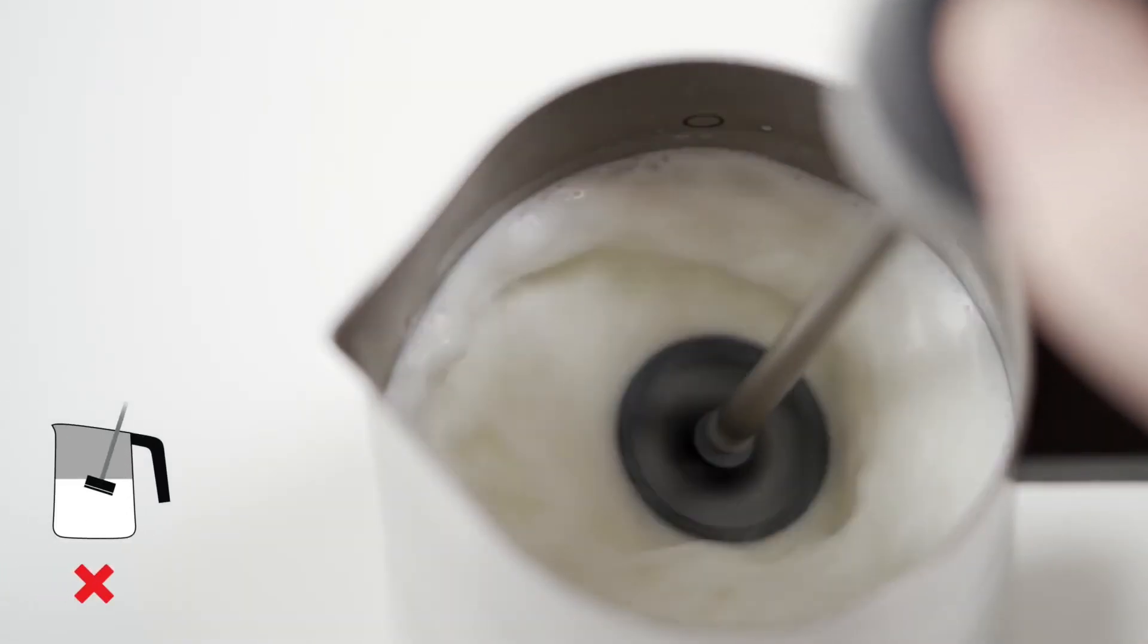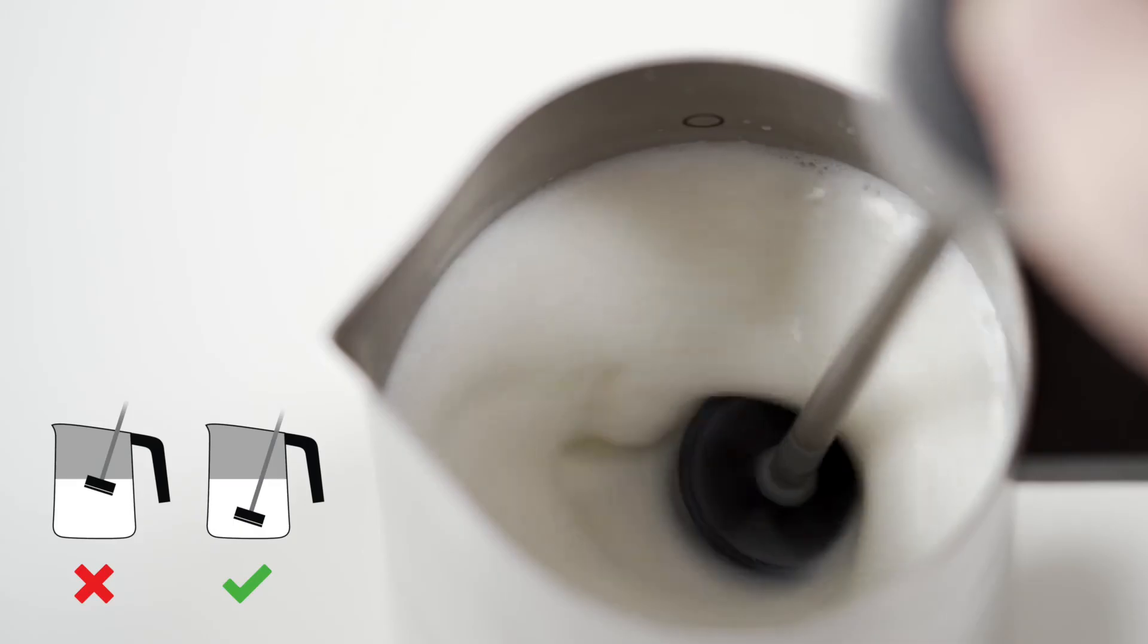Make sure to submerge the impeller deep inside the milk. If you churn near the surface, big bubbles will appear.